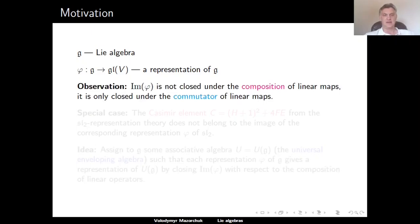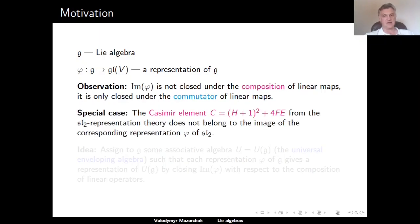We have to observe one thing: the image of this homomorphism phi is not closed under the composition of linear maps. The reason is that phi is only a homomorphism of Lie algebras and not of associative algebras. So the image of phi is only closed under the commutator of linear maps, which is the Lie algebra operation in GL(V). A special case is the so-called Casimir element, which we saw when studying finite-dimensional representations of the Lie algebra SL2. This Casimir element is defined by the expression (h+1)² + 4FE, where we see the composition of usual linear operators and not their commutators.